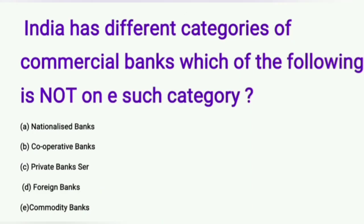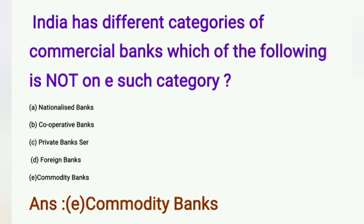Question: India has different categories of commercial banks. Which of the following is NOT one such category? A) national banks, B) co-body bank, C) private bank, D) foreign bank, E) commodity bank. The answer is commodity banks.